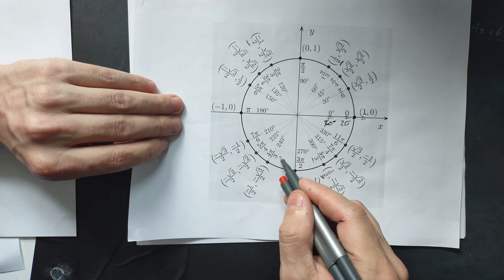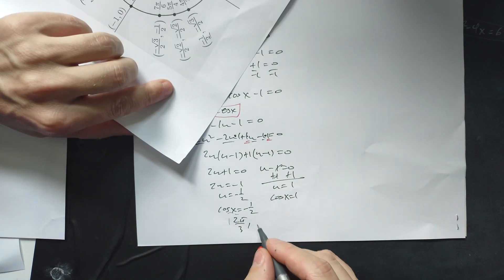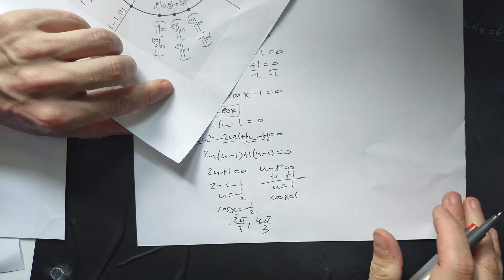So it looks as though at 4 pi over 3, right? Because it's negative 1 half. That's the x coordinate. So it's at 4 pi over 3. So you write 4 pi over 3 right here.